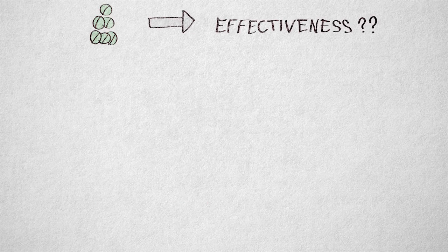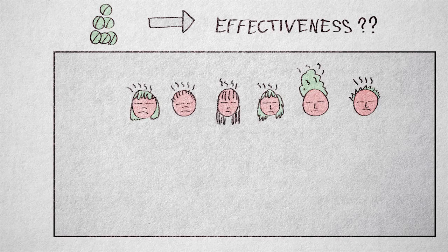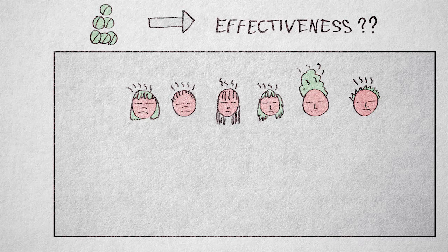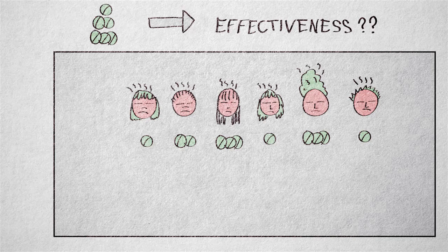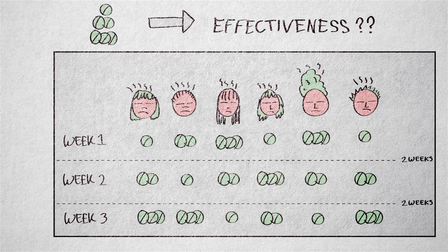Suppose we investigate the effectiveness of an experimental drug in reducing migraine attacks at different dosages. Our participants are migraine patients. A standard approach would be to assign patients randomly to receive a low, medium, or high dosage of the drug for one week. But we could also choose to let each participant experience all three dosages, one after the other, for a total of three weeks.